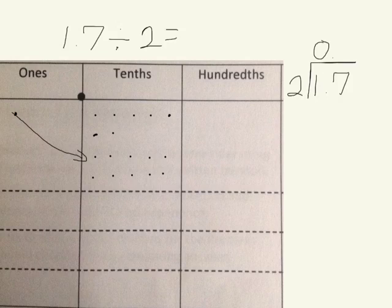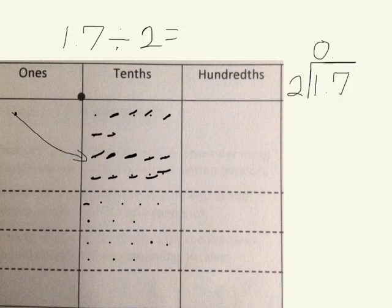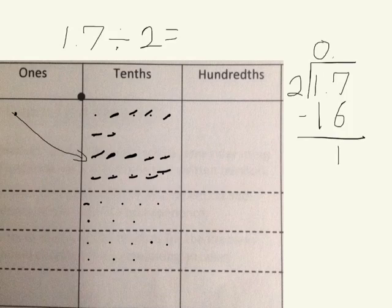I know that 16 divided by 2 would be 8, so I should be able to get 8 tenths in each of my two sections. I took my 17 tenths, I divided into two equal groups, and when I did that I got 8 in each group. The total number that I got were 16 of those tenths. When I share the 16 tenths, that leaves me with 1 tenth left. I cannot divide my 1 tenth into two equal parts. This went in 8 times.